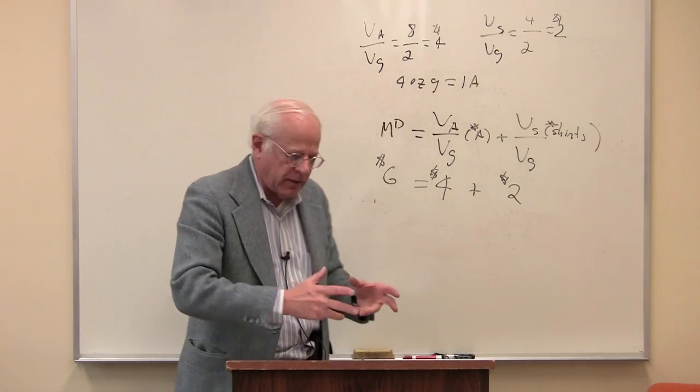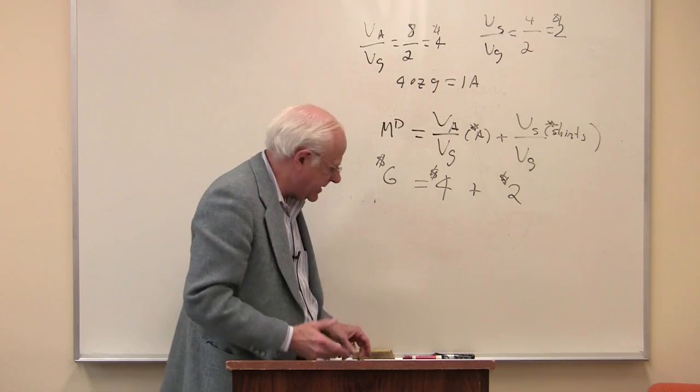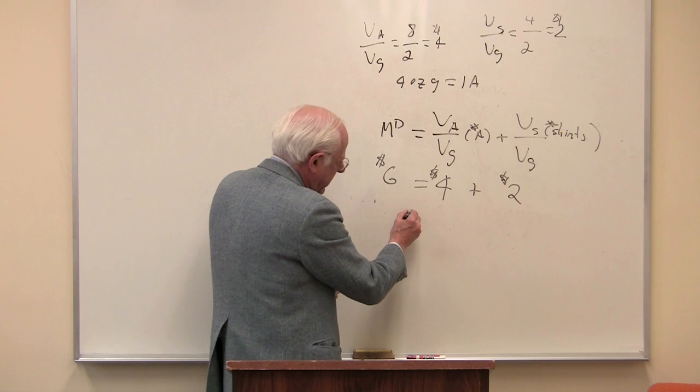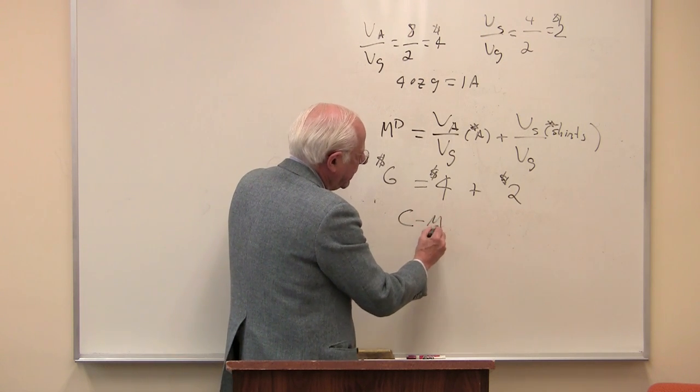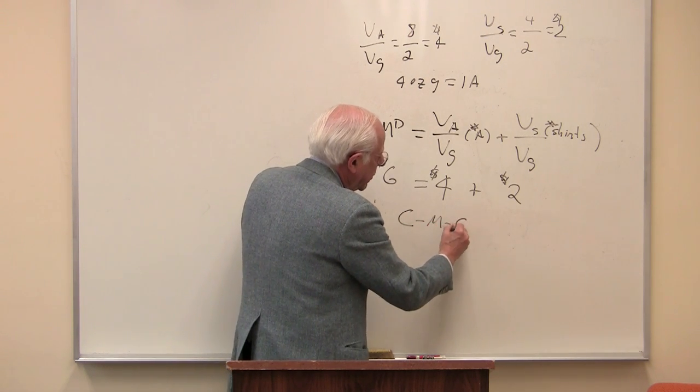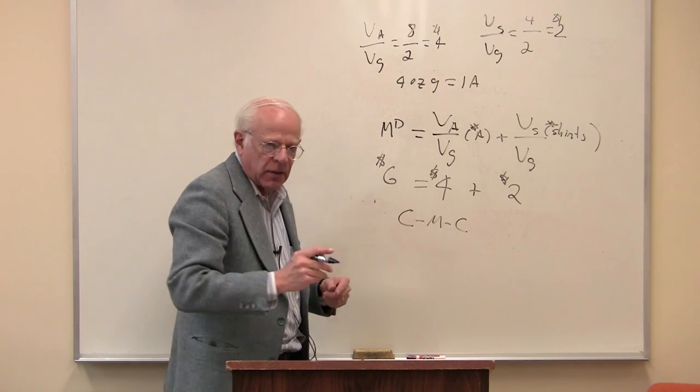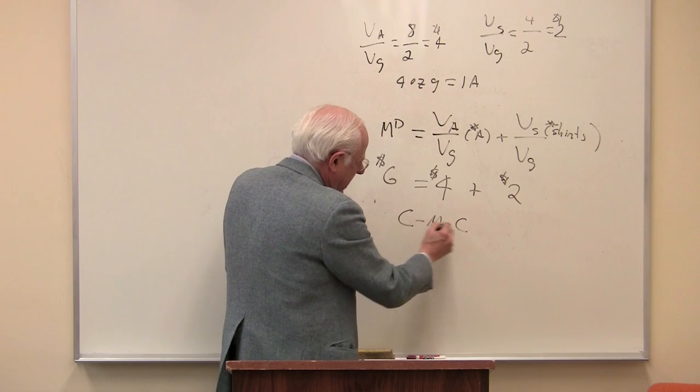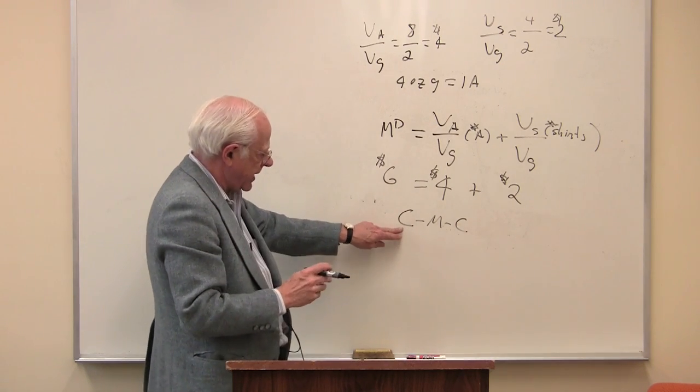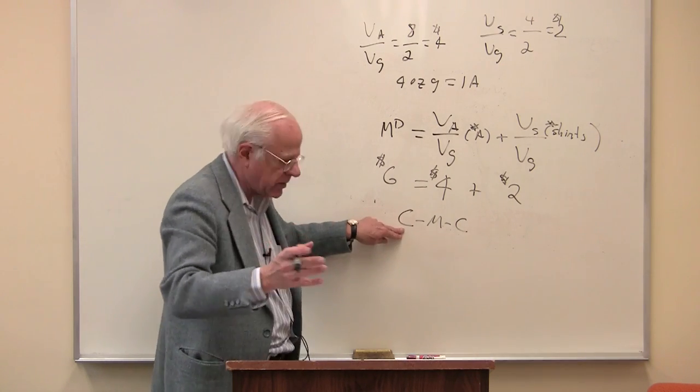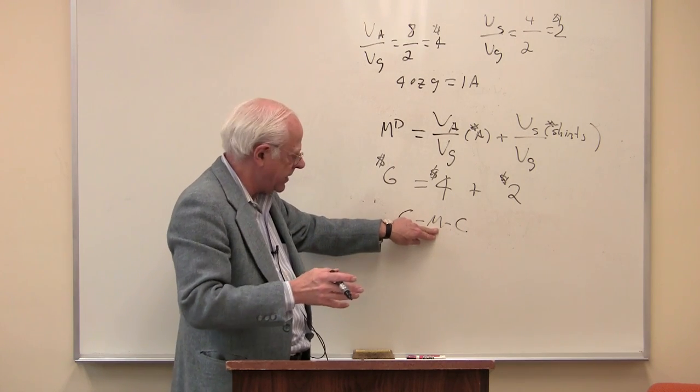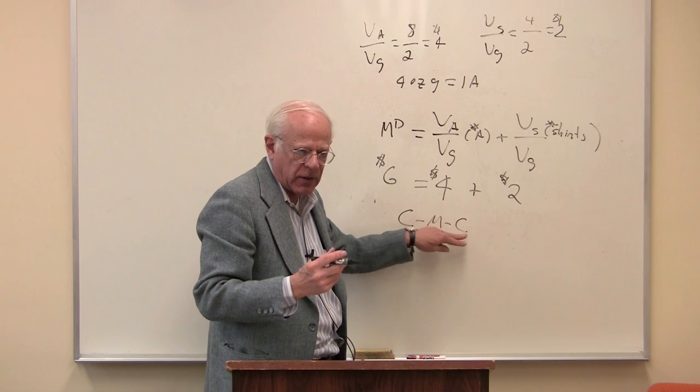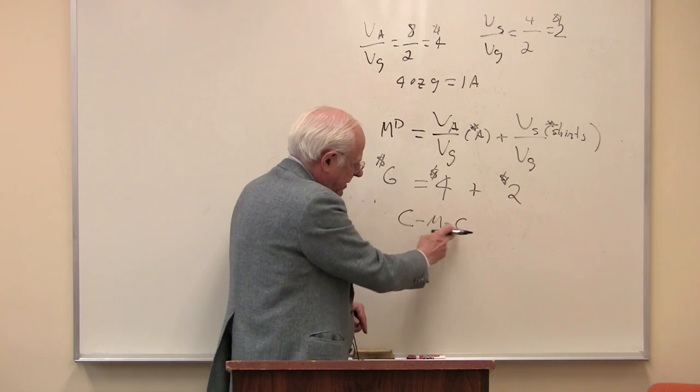Marx calls this money as a medium of exchange. So in other words, to carry forward the exchange in the society, the commodities are sold for money and that money is used to purchase other commodities. Notice that there are different use values. These are not the same. CMC refers to you start out with a use value, whatever it is, you sell it for money, you alienate it, then you use the money to buy some other commodity and you acquire its use value.